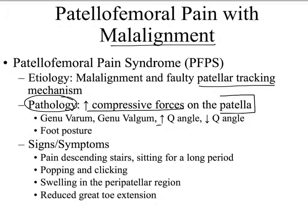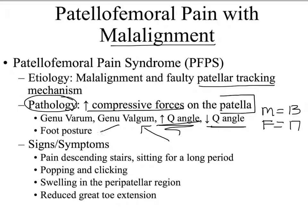It typically starts with the pelvis — the patient will present with either an increased or decreased Q angle. For males, the normative Q angle is about 13 degrees, and for females about 17 degrees plus or minus one. An increased Q angle typically leads to genu valgum at the knee, which could lead to hyperpronation at the foot. Conversely, a decreased Q angle could lead to genu valgum at the hip and increased supination forces at the foot.